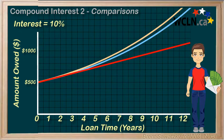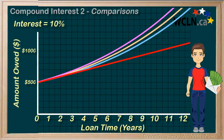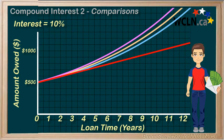If we compounded daily, we'd see even a bit more of a difference, again separating more over time. So what can we conclude about all this? Simple interest is the simplest situation — just a nice straight line. Compound interest, on the other hand, grows exponentially. It starts off really similar to simple interest, but as time goes on, it starts to become more dramatically different. Also, we see that the more often we compound, the faster the principal grows, and the more interest being paid.